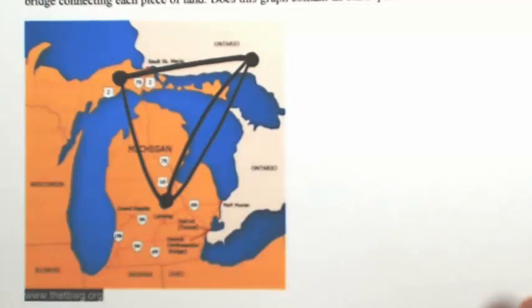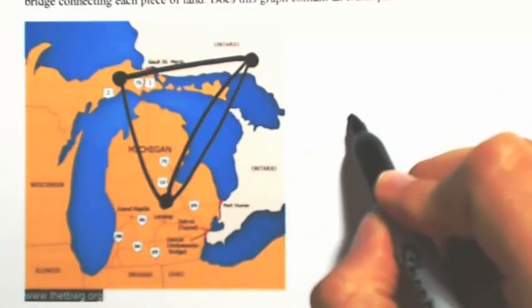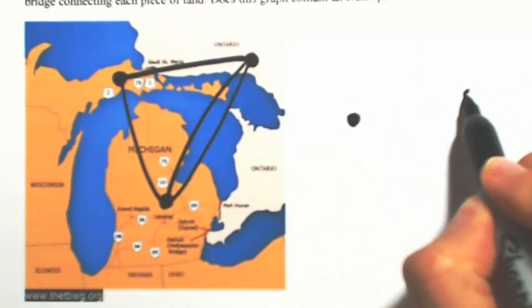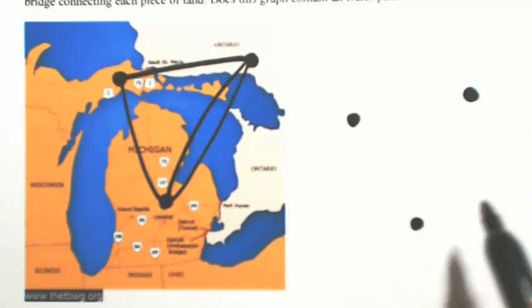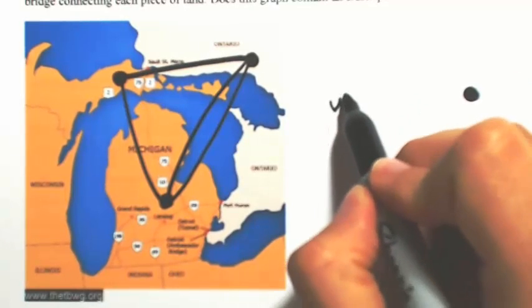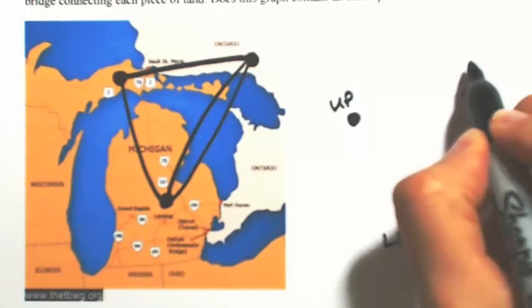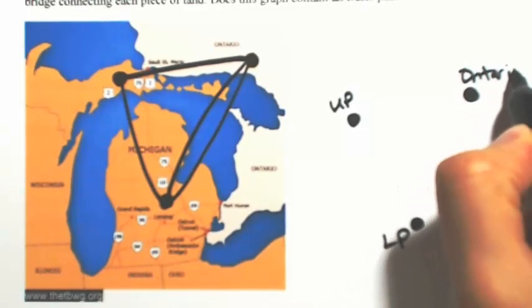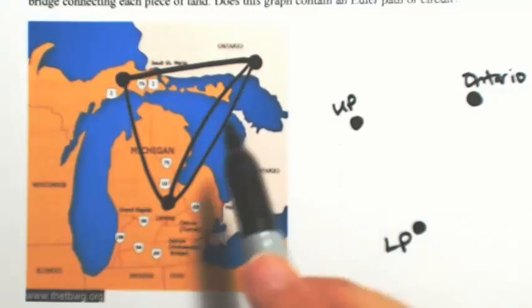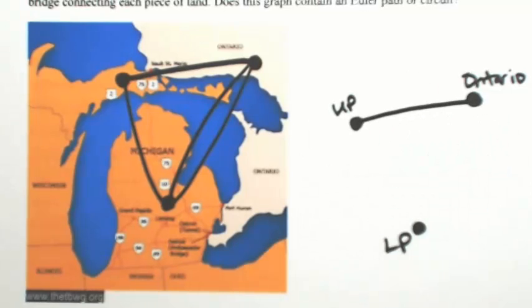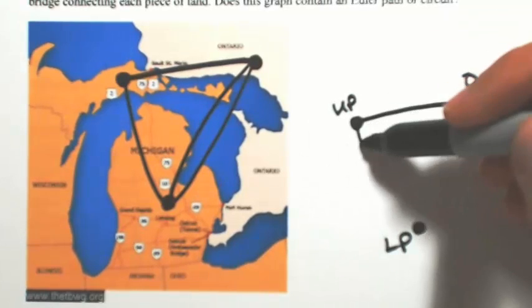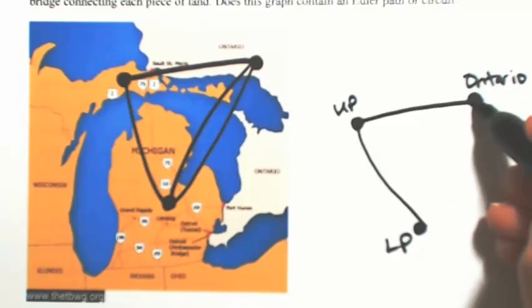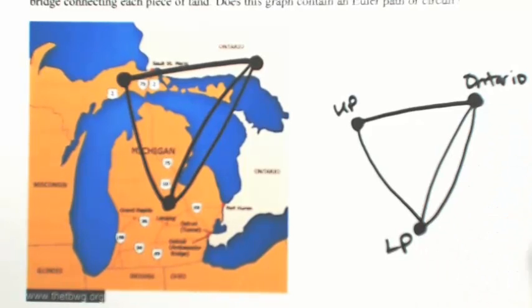So let me just extract this picture to the right. We have three vertices: the Upper Peninsula, the Lower Peninsula, and Ontario. One bridge from the Upper to Ontario, one between the Upper and the Lower Peninsula, and then two between the Lower Peninsula and Ontario.